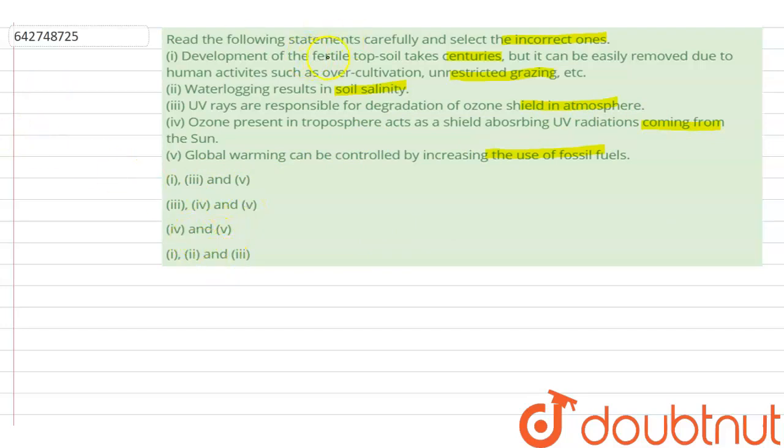The first statement - development of the fertile topsoil takes centuries - this is true, and it can be easily removed due to human activities such as over-cultivation, unrestricted grazing of animals, etc. So this statement is true.